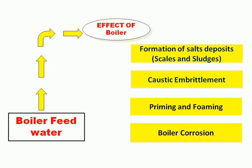What are the effects of these impurities being present in the water? The boiler faces four types of disadvantages. The first one is the formation of salt deposits — scale and sludge. The second one is caustic embrittlement. The third is foaming. And the fourth one is boiler corrosion. These are the four types of disadvantages.